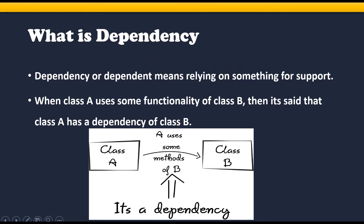Now, class A is dependent on class B. Transferring the task of creating the object to someone else and directly using the dependency is called Dependency Injection. With this example, the dependency injection will create an object for class B and inject that object into class A. This is called Dependency Injection.